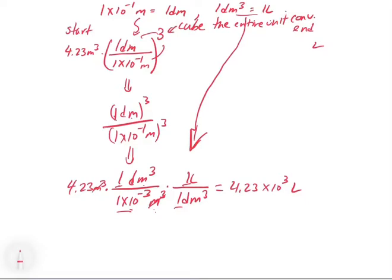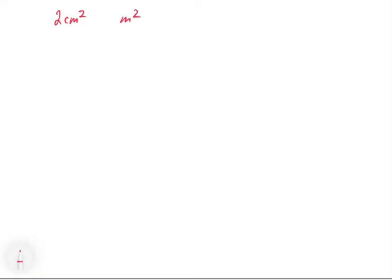What we've learned is that if we want to convert any derived unit — cubed or squared — we can apply this method. For example, let's convert 2 centimeters squared to meters squared. A squared unit represents an area — for instance, the area of a table is length times width, which gives you centimeters squared as a surface area.